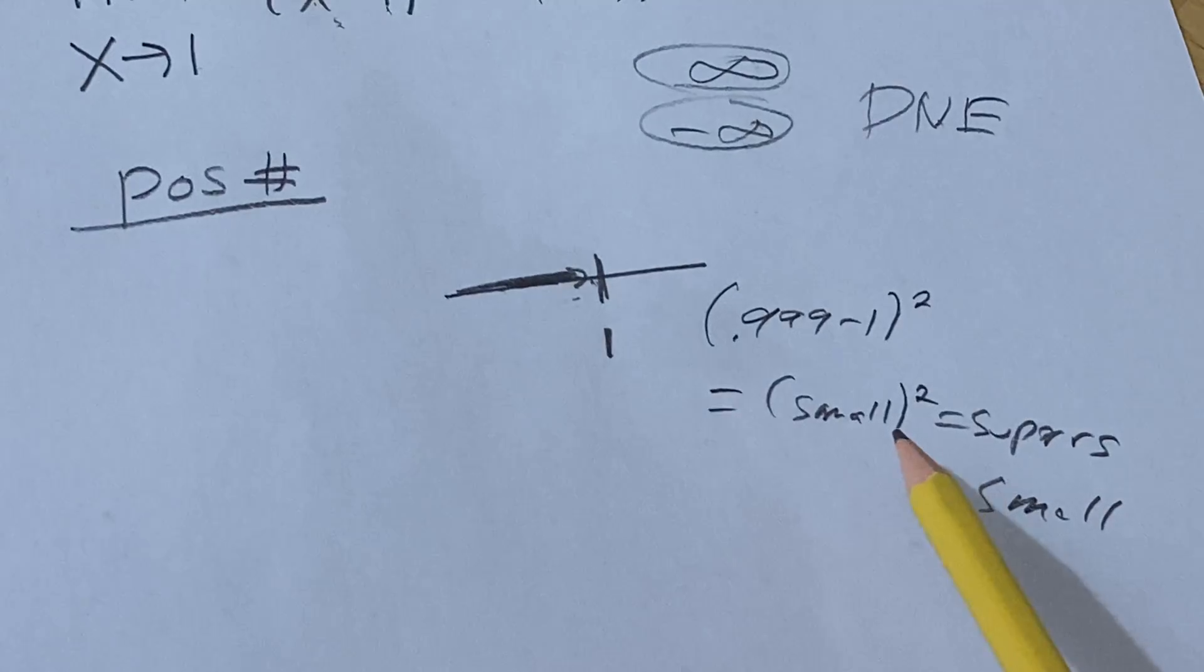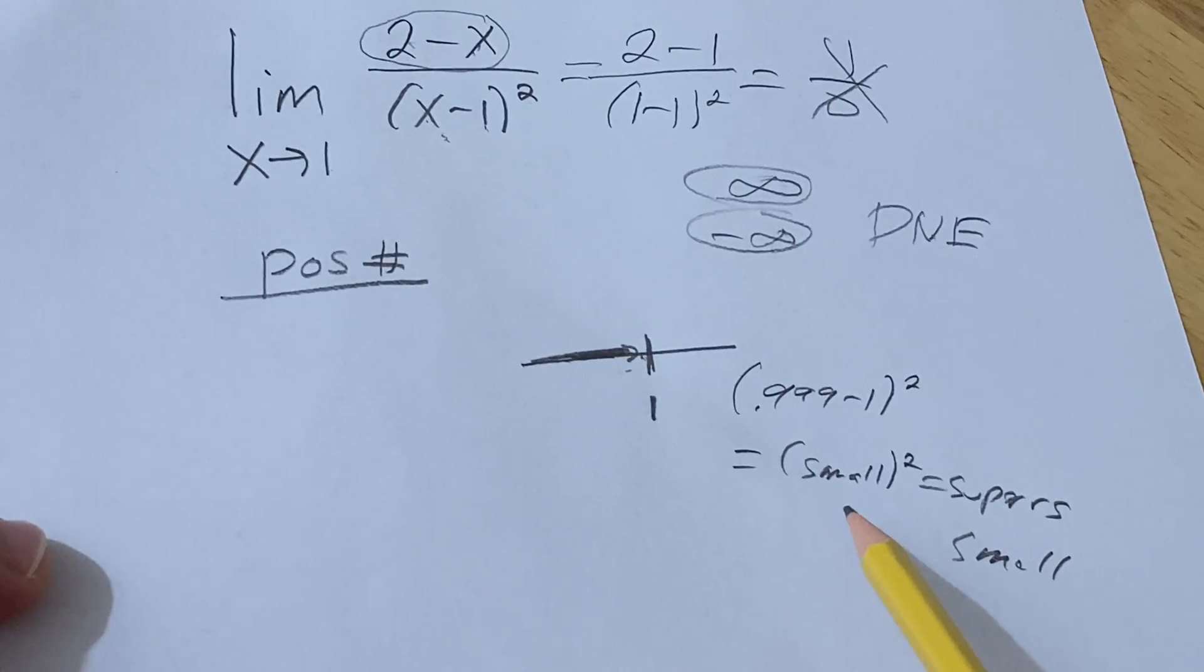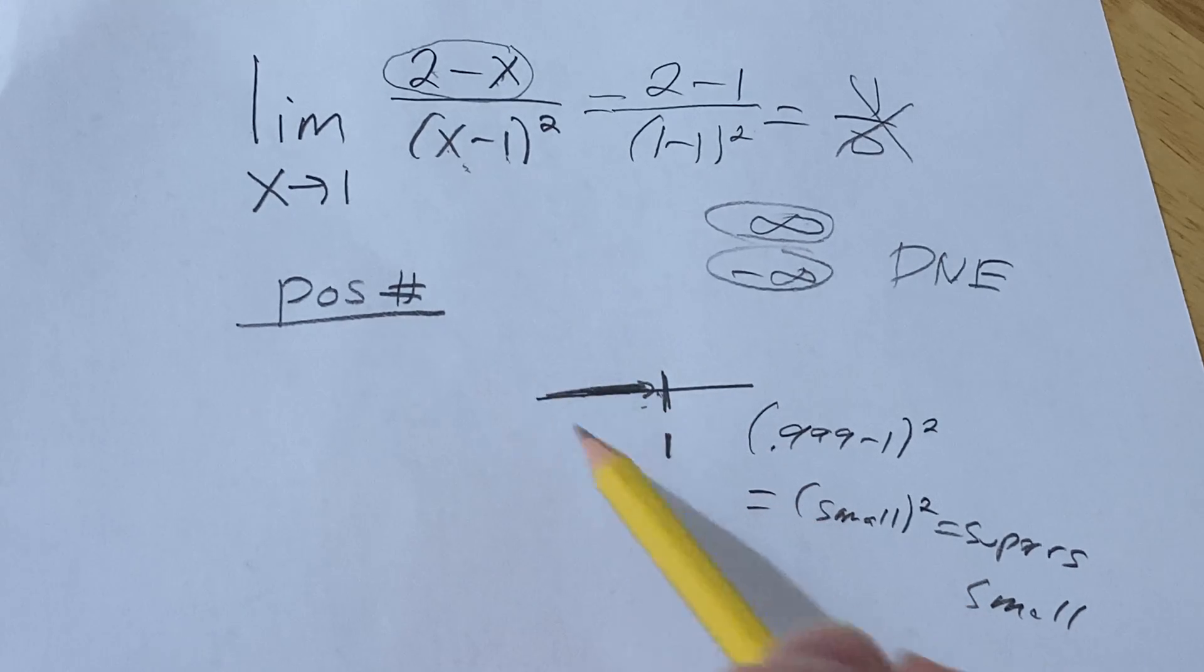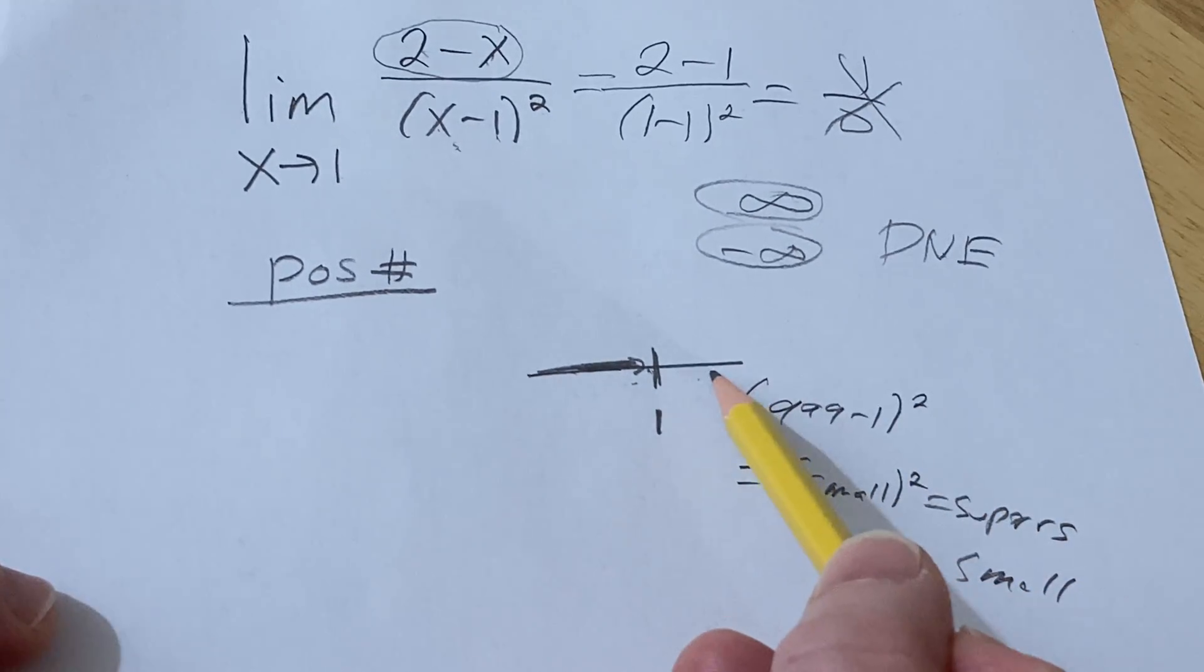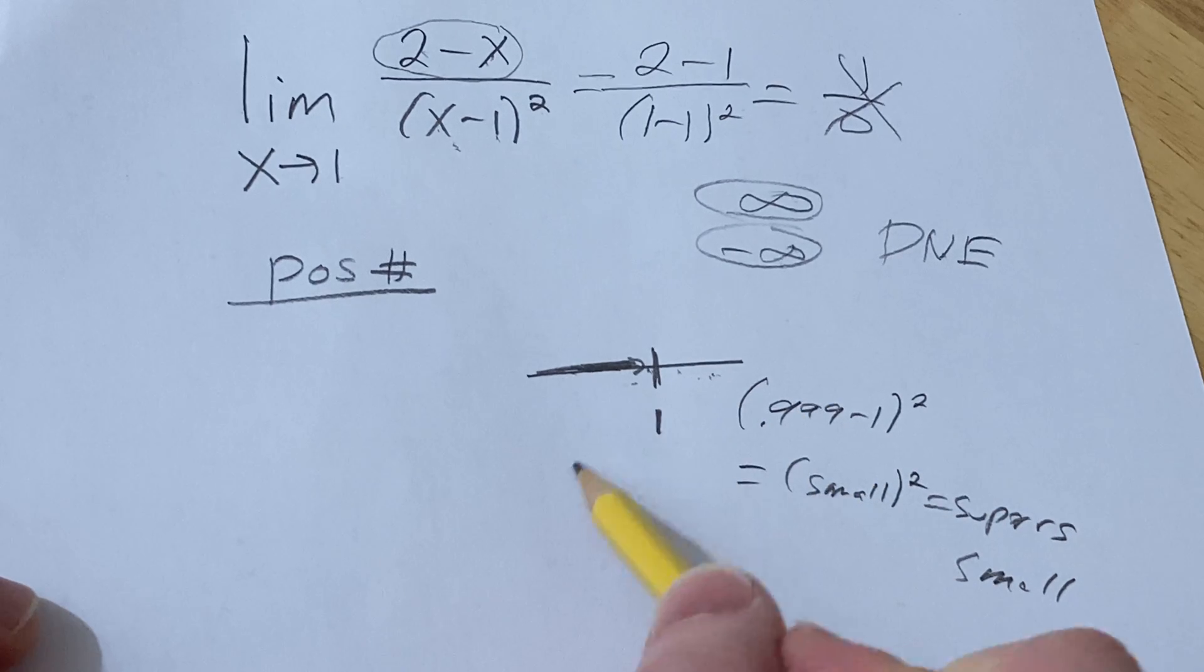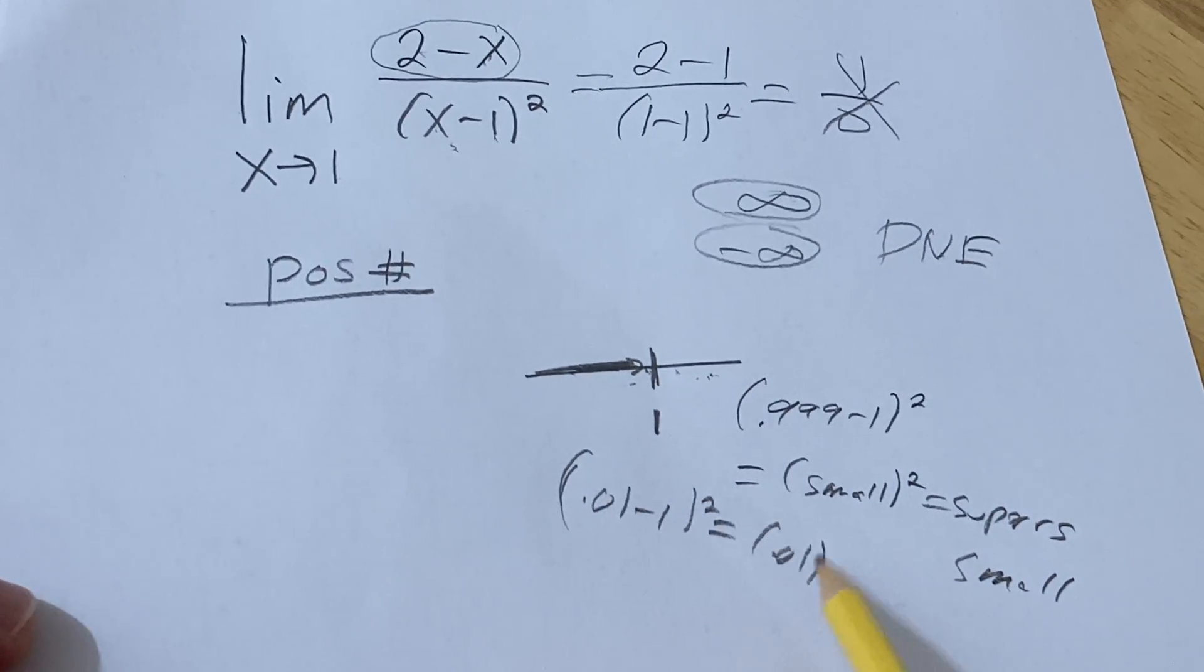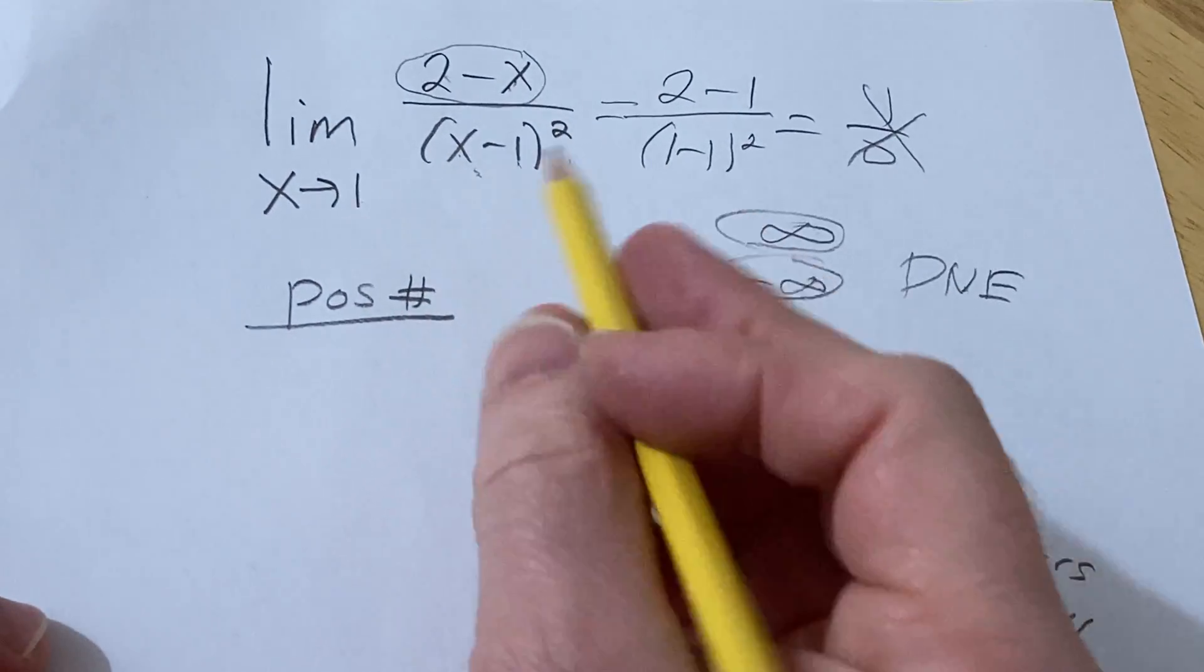So when you do something like this, you get stuff that's really small. So the idea is that we're going to have a really small number on the bottom. Likewise, if you're approaching from this direction, maybe something like 1.01 minus 1 squared, it's also going to be super small. So the bottom is super small, and it's positive because it's squared, that's the key.